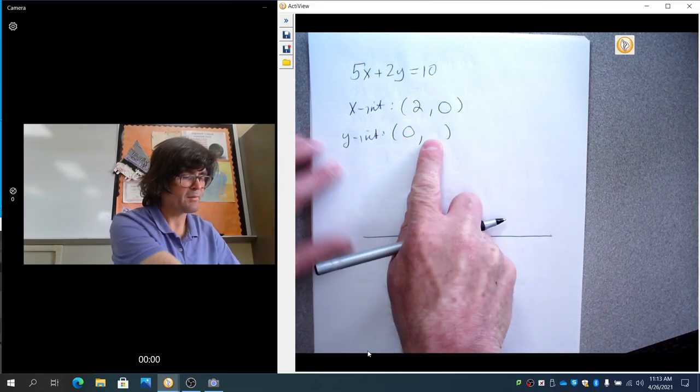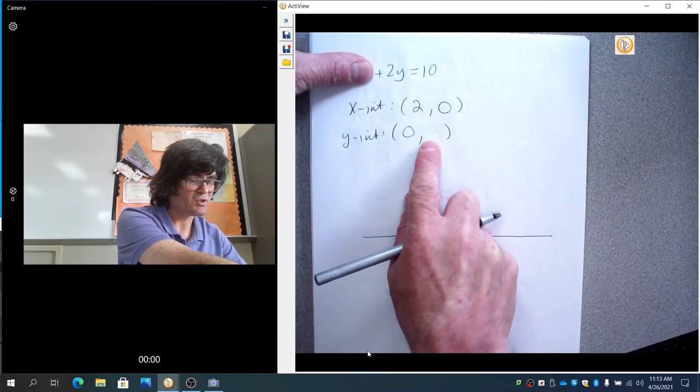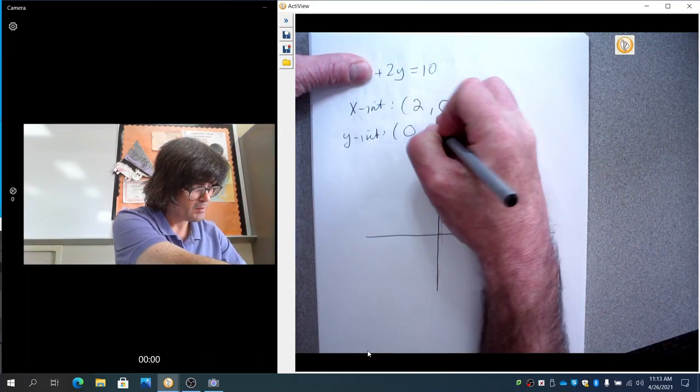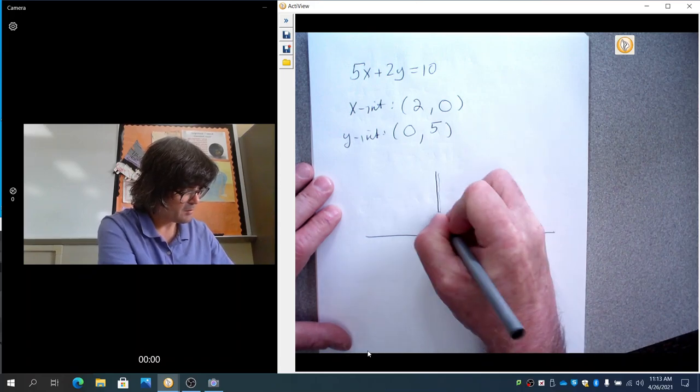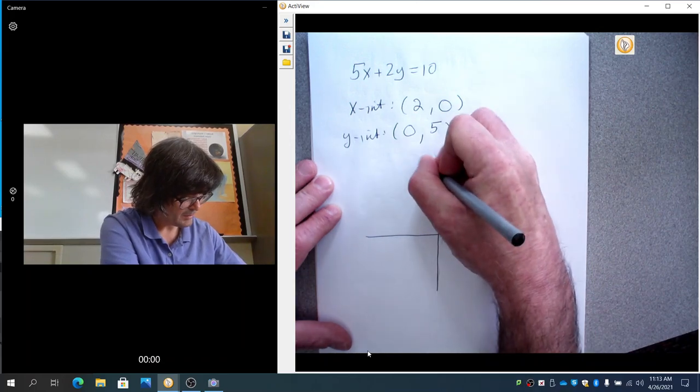For my y-intercept, if I did this, if I put 0 in for x, canceled that out and said 2 times something equals 10, that would be 5. 2 times 5 equals 10. So, what you could have done is just found your x-intercept and your y-intercept. Plot those points, you've got the exact same line.